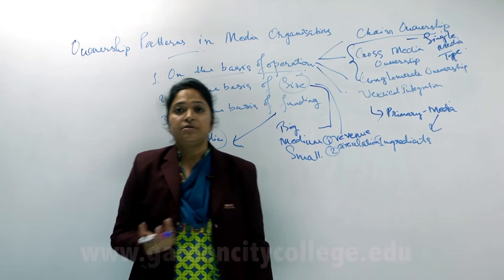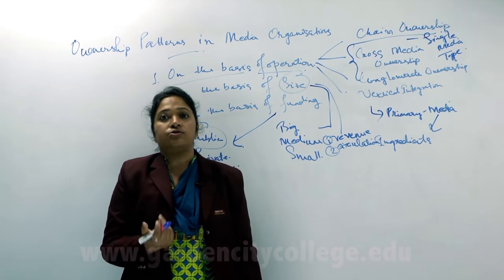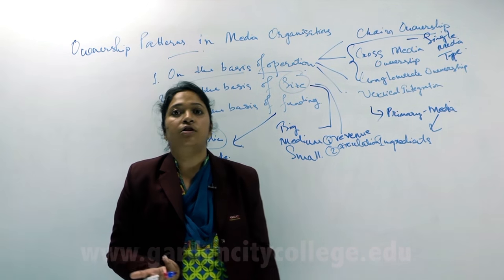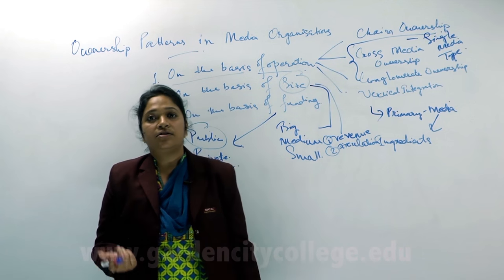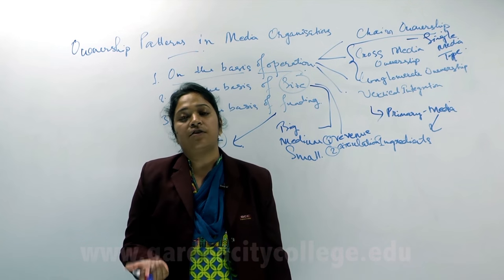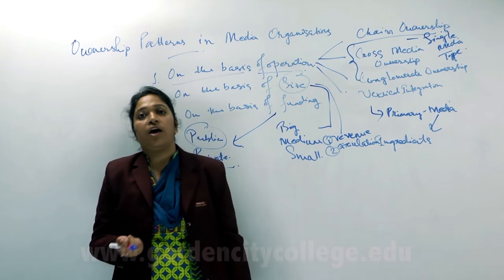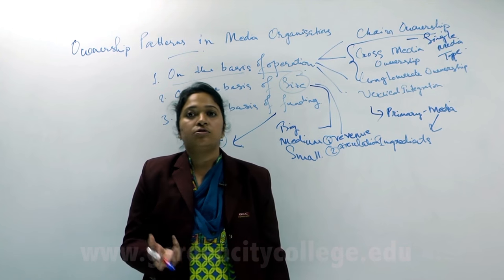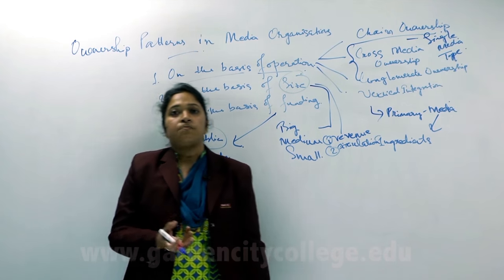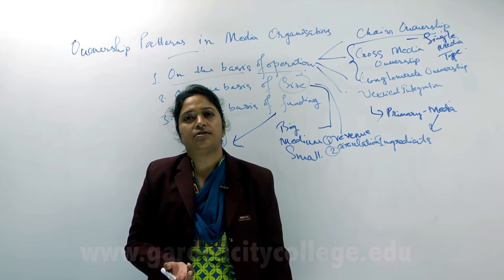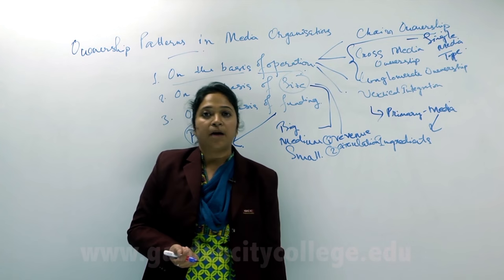When we talk about private ownership, we are talking about businesses run by families, stakeholders, and shareholders. If we look into our media history, in print media we can see how the Kasturi Sons Limited family has been controlling The Hindu for a long period of time, and Ramoji Rao has Eenadu. Those are privately owned and funded, where the decision rests with the private owners of the different kinds of media organizations, and on that basis media ownership can be defined.